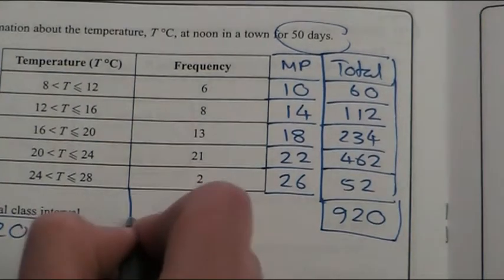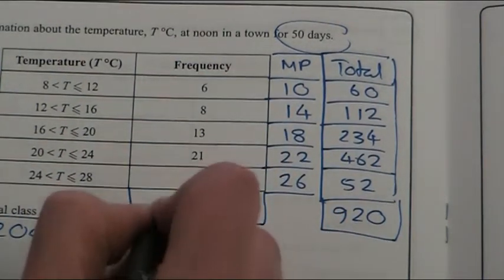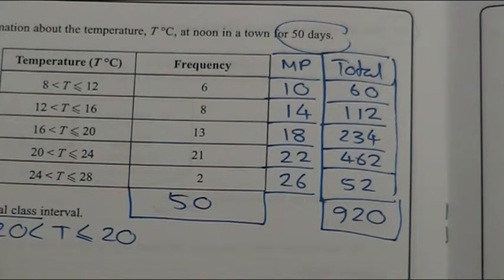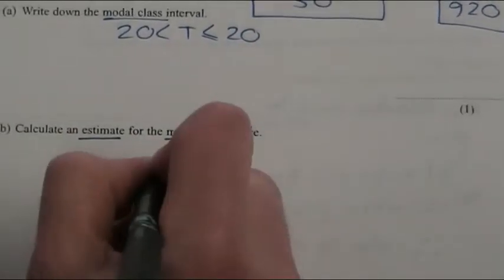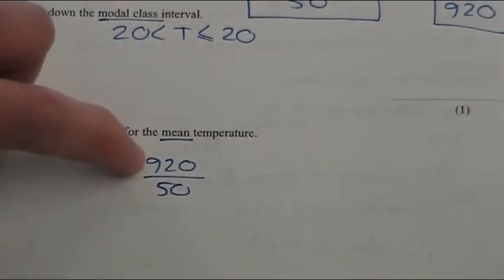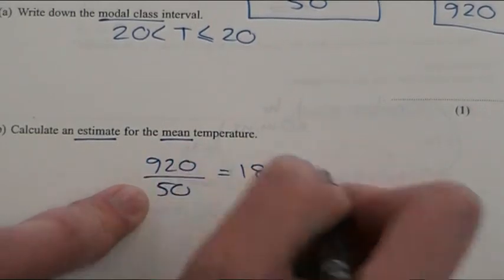But also, if you're not told that, you just add up how many days it was over, the frequency, how often you did the experiment, which is 50. So, 920 divided by 50 is 18.4. I'm going to write that here. 920 divided by 50. Remember, total of them all added up together, divided by how many there were, 18.4 degrees centigrade.